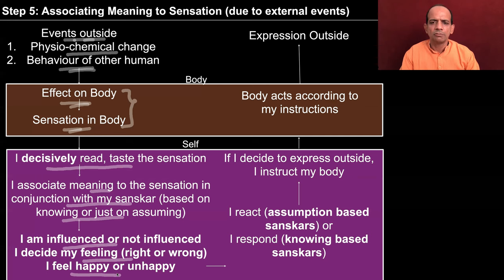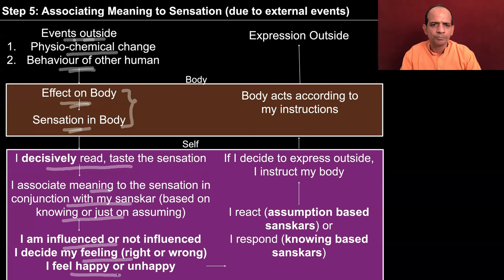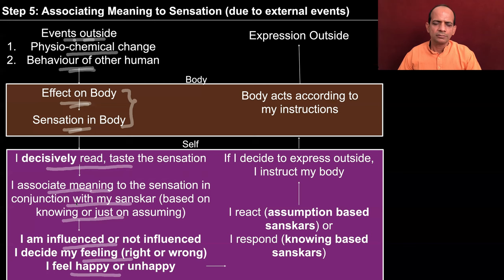For example, somebody is talking to you and the words are reaching you. You have one kind of meaning associated and you are listening carefully. Then you are suddenly reminded that this person had been conspiring against you. Now the moment you associate the idea of conspiracy with the words of the other person, your feeling changes. So you are associating some meaning to the words — earlier you were associating one kind of meaning, treating the other person as a friend. Now you are treating the other person as a conspirator. The moment you change the meaning associated to the words, some difference takes place in you, and you are influenced or not influenced depending upon the meaning associated.